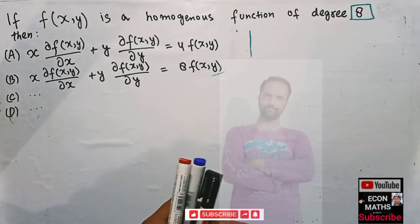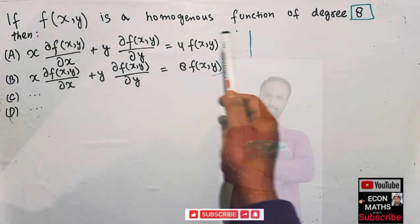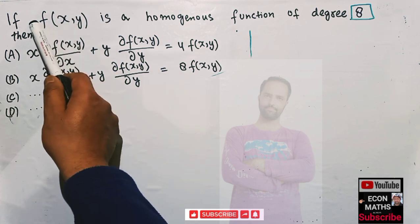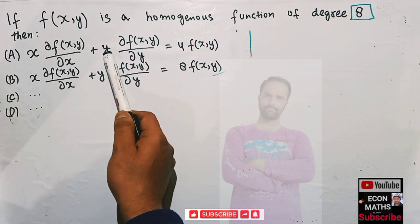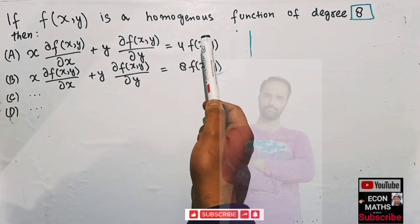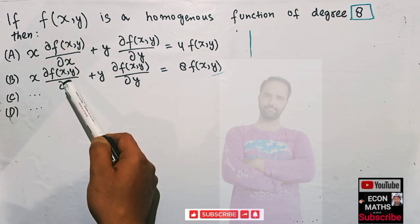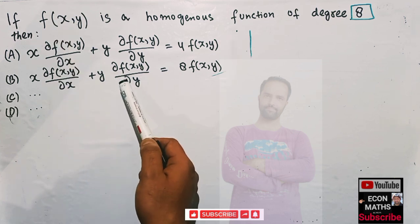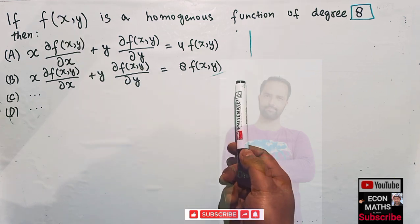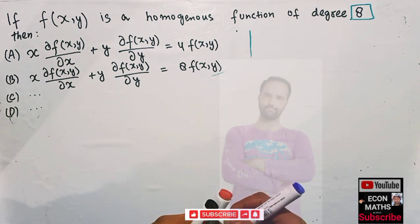A question from the Gate economics paper of 2022 was: if f(x,y) is a homogeneous function of degree 8, then x times the partial derivative with respect to x plus y times the partial derivative with respect to y equals 4 times f(x,y). Another option was the same expression equals 8 times f(x,y). Options C and D I am not able to remember. So let's try to solve this question.